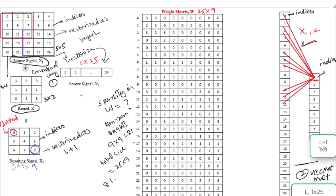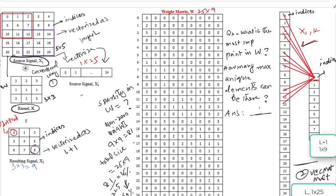Let's compute the sparsity in the weight matrix W. I think it will be the same as 64%. Question number 2: How many unique elements are there in the weight matrix W? Please pause the video and answer the question. The unique elements are only 9. Because the weight matrix W is constructed from K, which has 3 by 3 size. This is the main concept behind weight sharing in convolutional architectures.